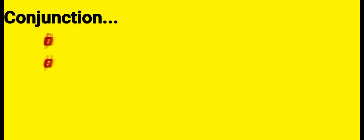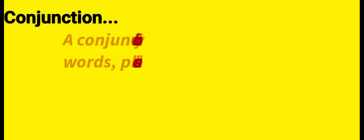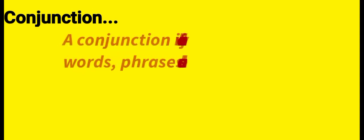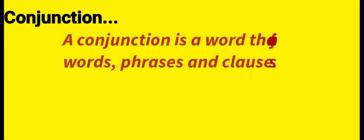Let's get started. What is a conjunction? A conjunction is a word that joins words, phrases, and clauses. Conjunctions are words that add two words, two phrases, and more than two phrases or clauses to create a meaningful sentence.